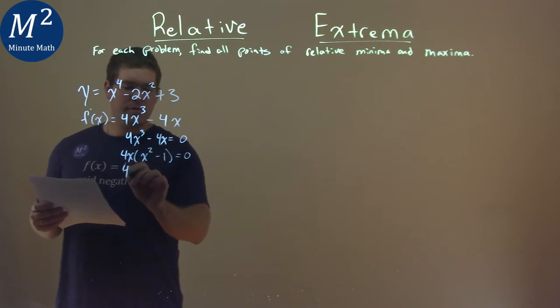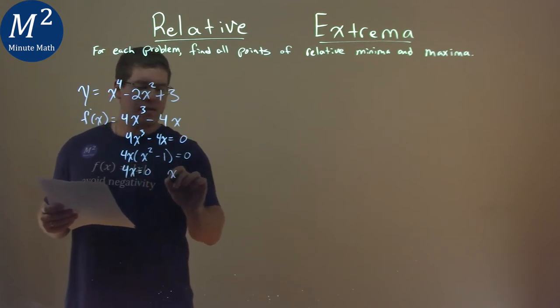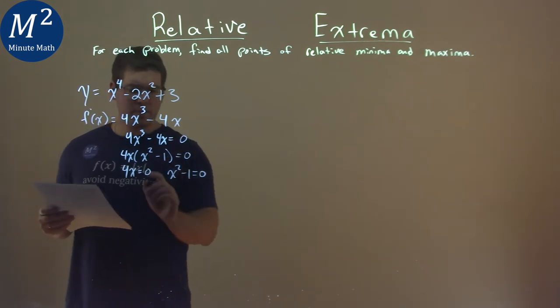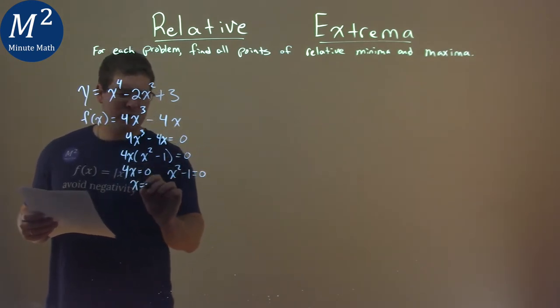Well, set both parts equal to 0. 4x equals 0, and x squared minus 1 equal to 0. From there, we'll divide both sides by 4, so x is just equal to 0.